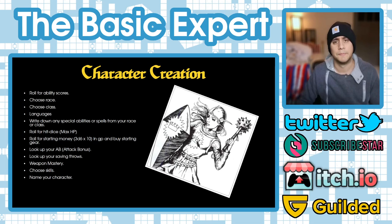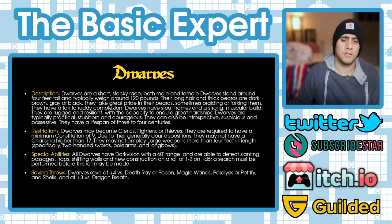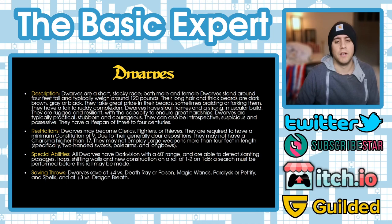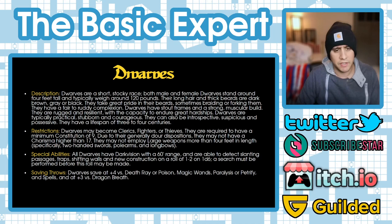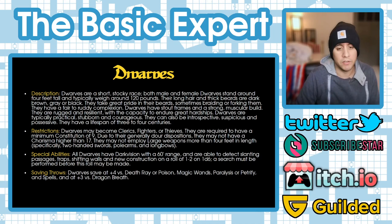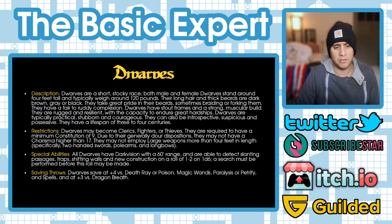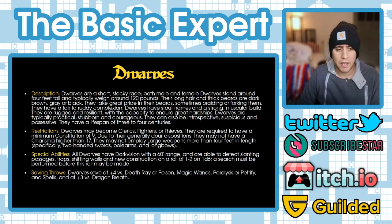Let's look at the character races in the core book. Dwarves are a short, stocky race — both male and female stand around four feet tall and weigh about 120 pounds. Their hair and thick beards are dark brown, gray, or black. They take great pride in their beards, sometimes braiding or forking them. They are rugged, resilient, practical, stubborn, and courageous, and have a lifespan of about three to four centuries. Dwarves may become clerics, fighters, or thieves, with a minimum constitution of nine required.